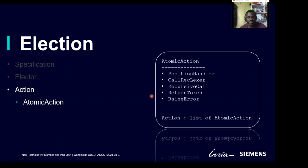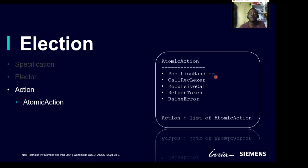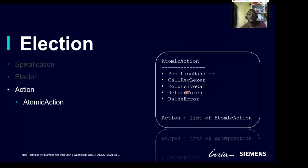We now have to define what an action is. Since we cannot make side effects on the position in Coq, we had to define the list of possible atomic actions. We have a position handler to modify the line number and column number — the absolute position is updated during the selection process. We also have the possibility to call another COCLEX, make a recursive call on the current lexer, return a token, or raise an error. An action is a list of atomic actions.